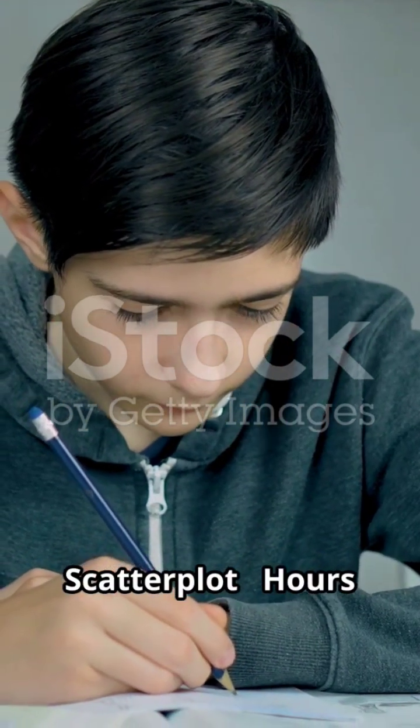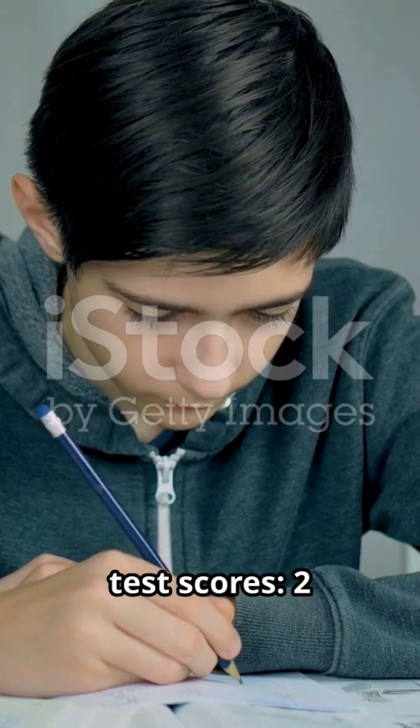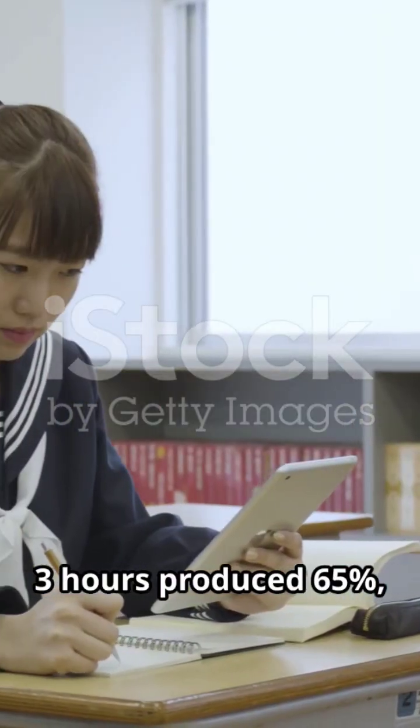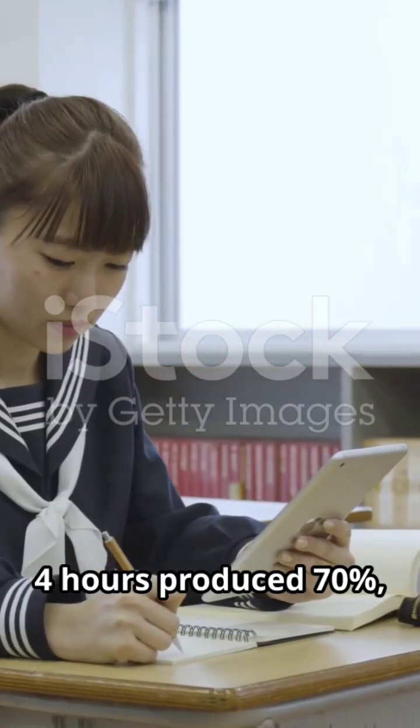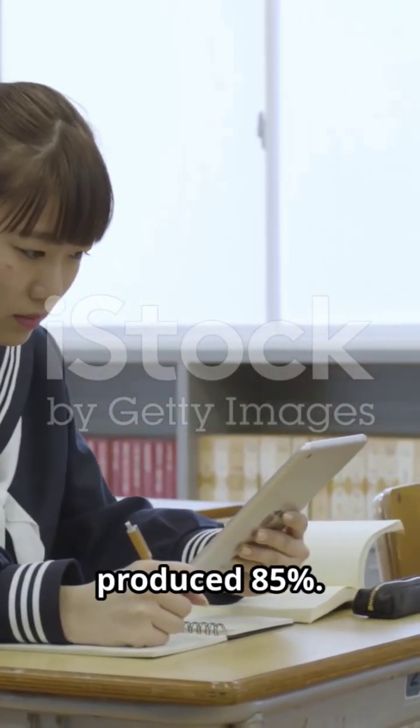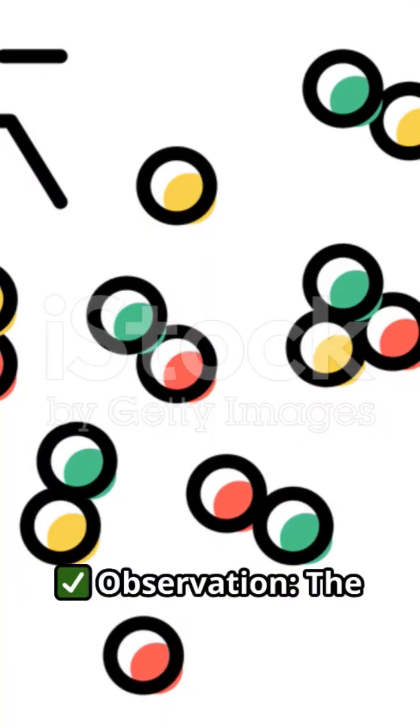Scatterplot: Hours studied versus test scores. 2 hours produced 60%, 3 hours produced 65%, 4 hours produced 70%, 5 hours produced 80%, and 6 hours produced 85%. Observation: